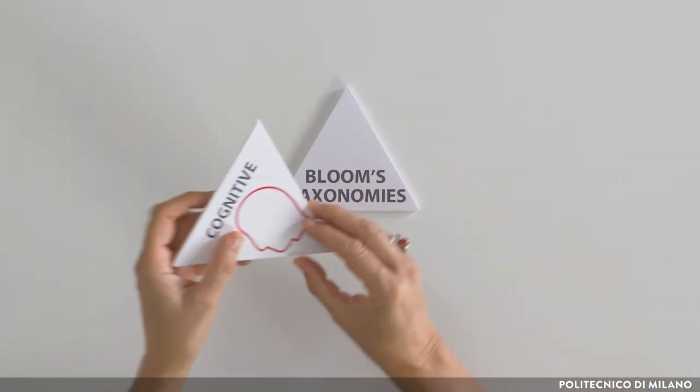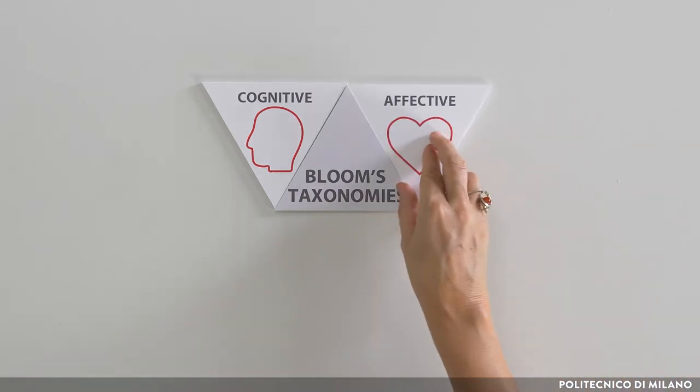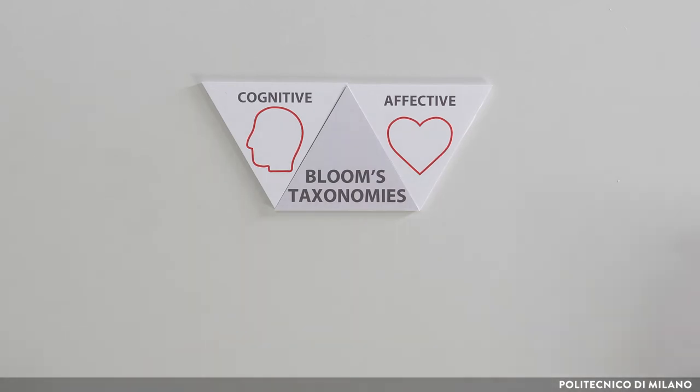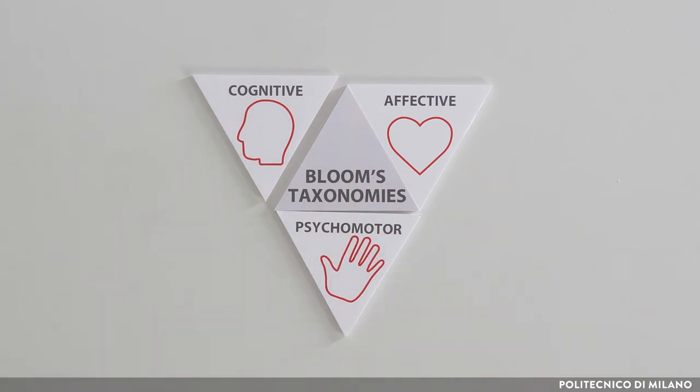Originally there were more than one Bloom's taxonomies. In the mid-50s, he analysed a series of learning domains in relation to which he drew up three taxonomies: one related to cognitive learning objectives, one related to the affective learning domain, and one to the psychomotor learning domain. Our educational systems, however, place a heavy weight on cognitive learning objectives, and this has made it so that since the 50s to this day, only the taxonomy related to cognitive learning objectives has been repeatedly analysed and spread.